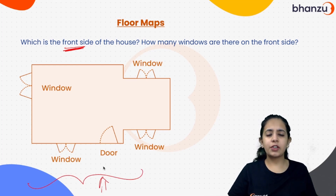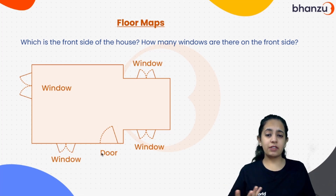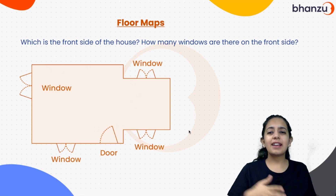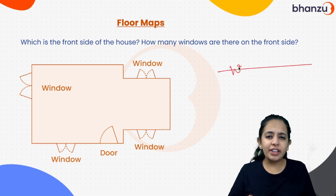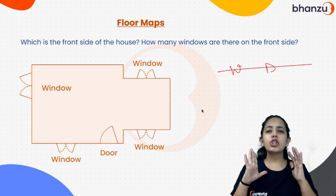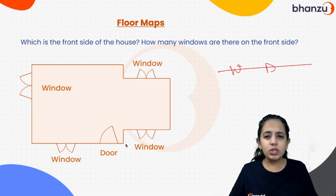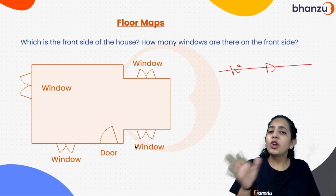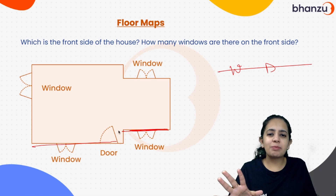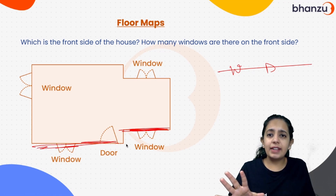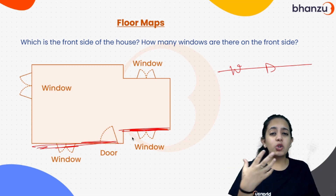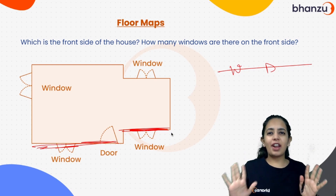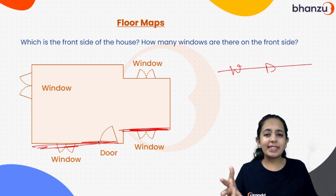If you look from the front that's the front view, and its opposite is the back view. If this is the front, the opposite is always the back. The sides are the side views. When you look at it from the front, you're going to see the window, the door, and another window. The sides are not visible from the front — only this portion with one window, one door, and one more window is visible.